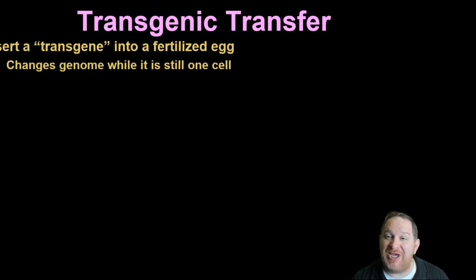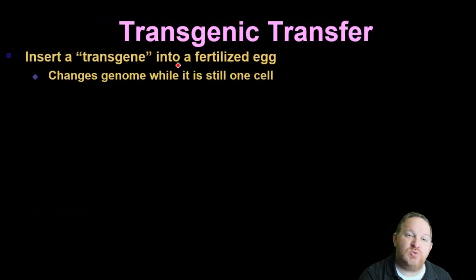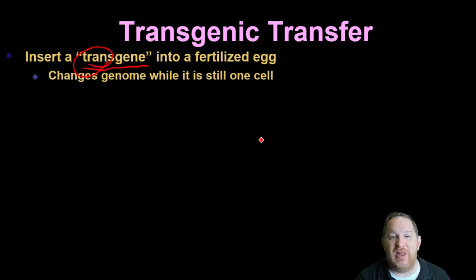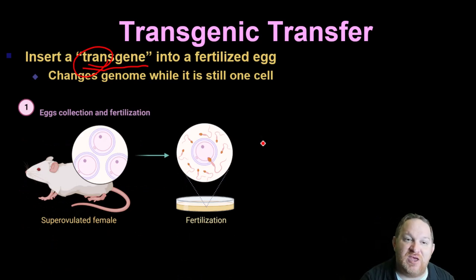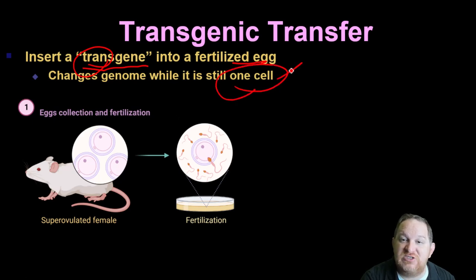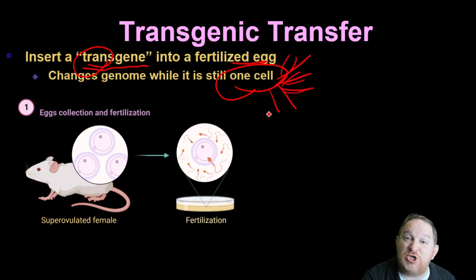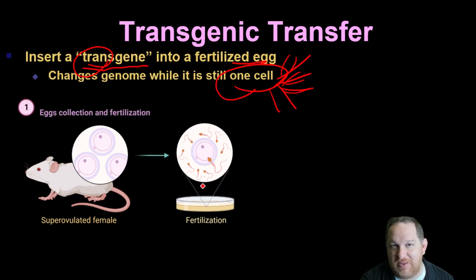Another way is transgenic transfer — inserting a transgene, meaning a gene from some other source, into a fertilized egg. The biological benefit is that if we change an embryo when it's just one cell, all resulting cells that form the baby will have the changed gene. We've definitely done this a lot in mice, though ethically there's still a question about doing this in humans.